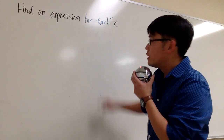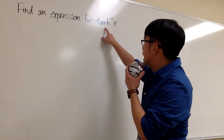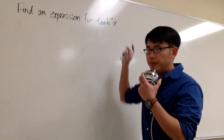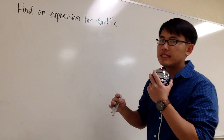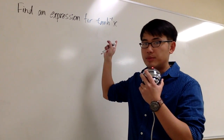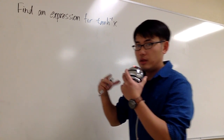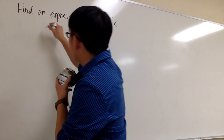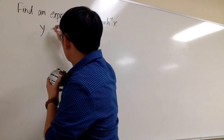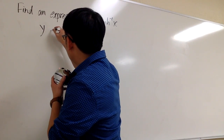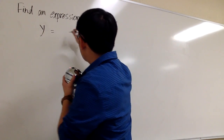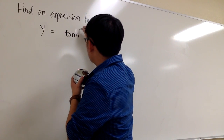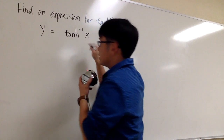We are going to write an expression for the inverse hyperbolic tangent of x. To begin, let's call that expression something else — let's say it's equal to y. So we have y equals the inverse hyperbolic tangent of x.